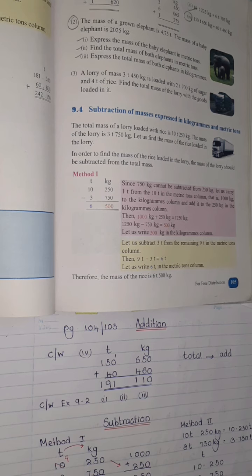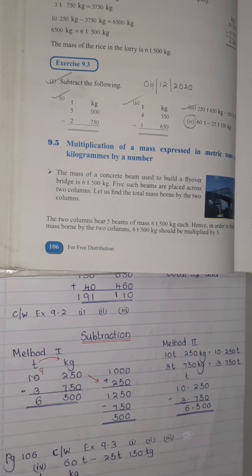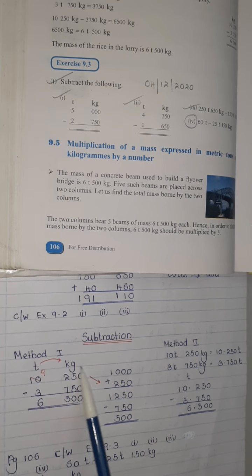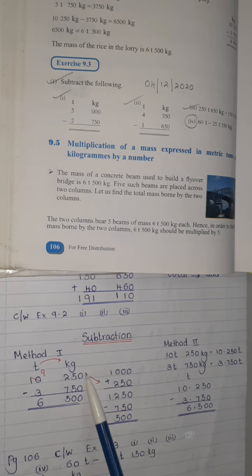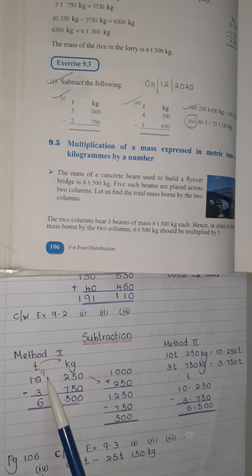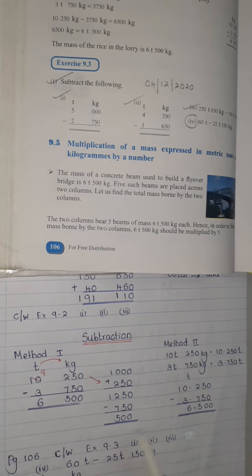Subtraction. Page 106, Exercise 9.3, Question number 1 — sub-questions 1, 2, and 3 for class work. Fourth one I am going to explain. There are two methods. Method 1: 10 tons 250 kg minus 3 tons 750 kg. Here 250 — you can't subtract 750, so you take 1 ton, which equals 1,000. 1,000 plus 250 equals 1,250. Then subtract 750 — your answer is 500 kg. You have given 1, so 9 minus 3 equals 6 tons.